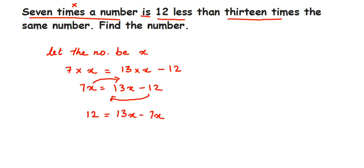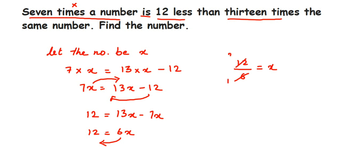Subtracting gives us 12 = 6x. To isolate x, we transpose 6 — since it's in multiplication, it becomes division. So x = 12 ÷ 6 = 2. Therefore, the number we had to find is 2.